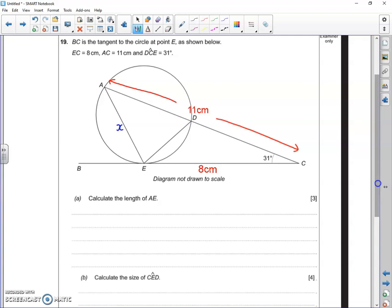And on that triangle, what we've got is two sides and an angle in between, an included angle. And if you've got two sides and an included angle, it's the cosine rule.